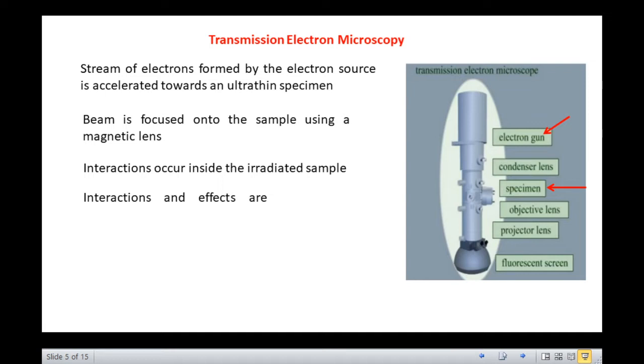Interactions occur inside the irradiated sample affecting the electron beam. These interactions and effects are detected and transformed into a magnified image, which is projected onto an imaging device like a fluorescent screen or a sensor like a charged coupled device, i.e., CCD.